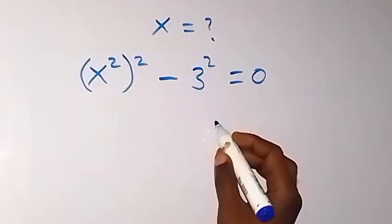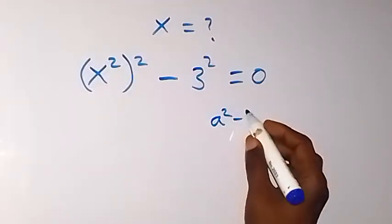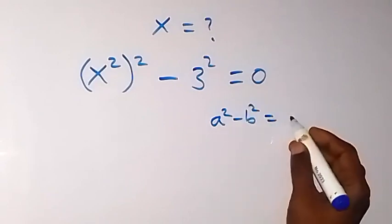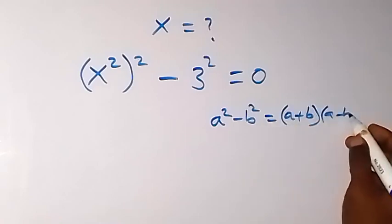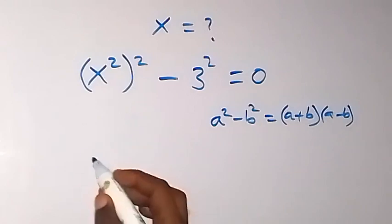When we have a squared minus b squared, this is the same thing as a plus b times a minus b. And from here, we apply it here.